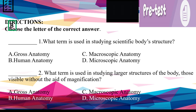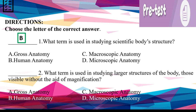If your answer is B, good job! Number 2: What term is used in studying larger structures of the body, those visible without the aid of magnification? A. Gross anatomy. B. Human anatomy. C. Macroscopic anatomy. D. Microscopic anatomy.